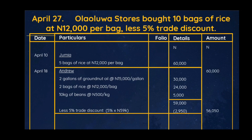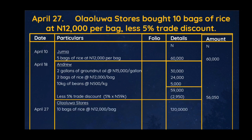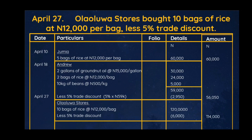April 27: Ololua bought 10 bags of rice at 12,000 per bag, less 5% trade discount. We identify the buyer — Ololua — and enter April 27, Ololua. Ololua bought 10 bags of rice at 12,000 per bag: 12,000 × 10 = 120,000 naira. There are no other items. Ololua is given a discount: less 5% trade discount. 5% of 120,000 = 6,000 naira. We close the entry and subtract 6,000 from 120,000, giving a balance of 114,000 naira.